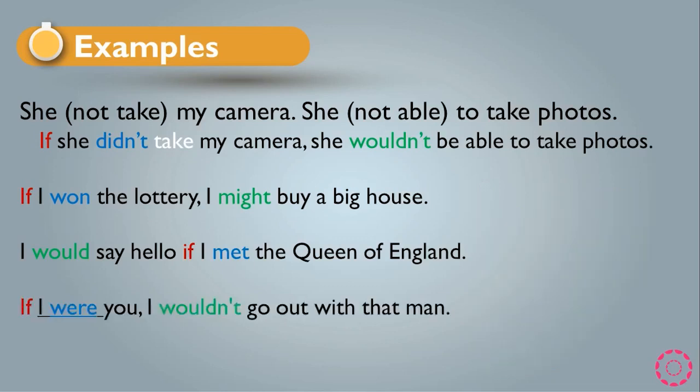Another example: 'If I were you, I wouldn't go out with that man.' Notice that 'were' is used with 'I.' In the second conditional, we can use 'were' with 'I' because it describes something imaginary or impossible. That is why we say 'if I were you, I wouldn't go out with that man.'